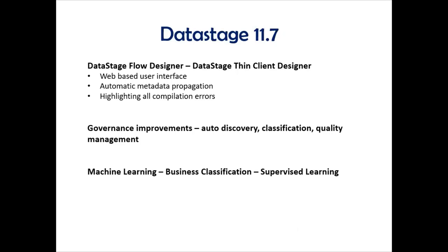Another interesting feature in the DataStage Flow Designer is automatic metadata propagation. If there is a change in metadata — for example, a change in the data type of one of the columns — we previously had to go to all the stages and make that change manually. Now that metadata change can automatically be propagated through all the other stages in the job, which is pretty interesting and helpful.